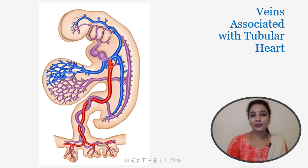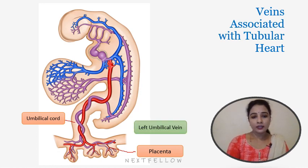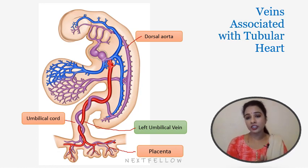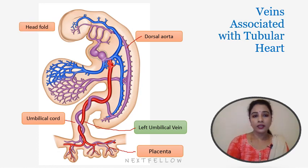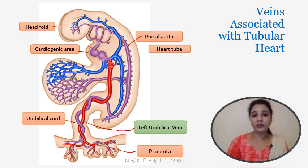Here is the sagittal view of the embryo showing the placenta on one side. We can see the umbilical cord containing umbilical veins and arteries. The left umbilical vein carries oxygenated blood towards the heart, shown in red. Here is the dorsal aorta, which is purple in color because it contains mixed blood — both oxygenated and deoxygenated. Here is the head fold of the embryo and this is the cardiogenic area containing the heart tube. The cranial end of the heart tube is the arterial end and the caudal end is the venous end.